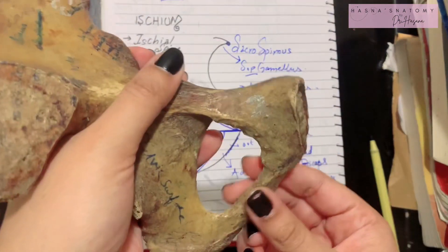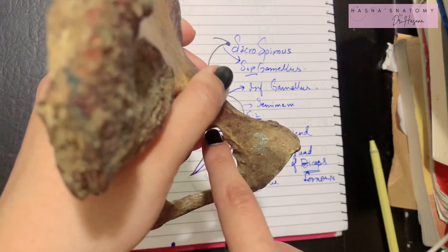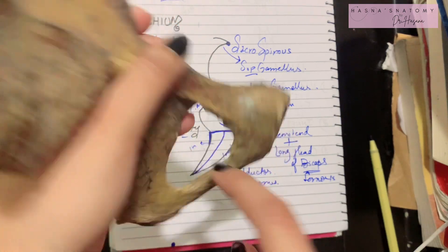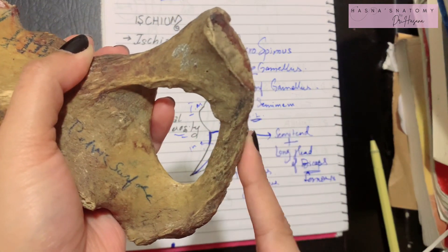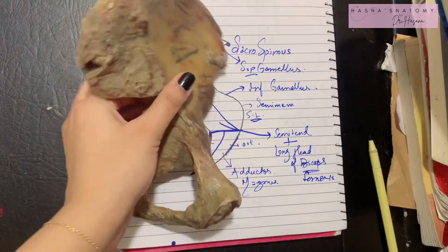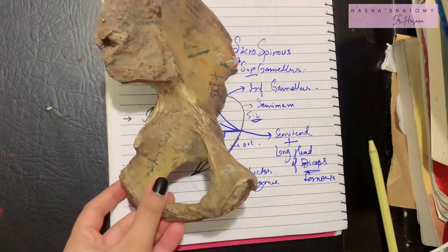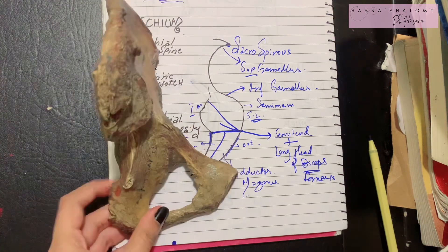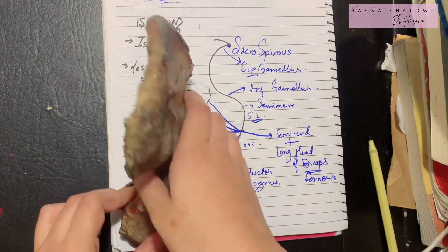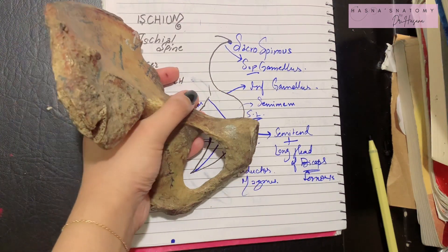The conjoint ischiopubic rami give origin to the obturator membrane on its upper border, and in its lower border it gives attachment to Colles' fascia. That was all you needed to know about the hip bone. Keep watching Hasna's Anatomy for more easy videos — don't forget to subscribe, thank you so much for watching.